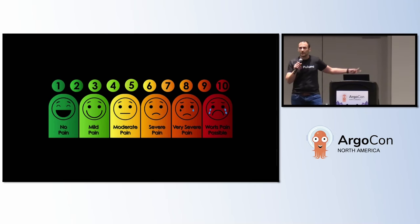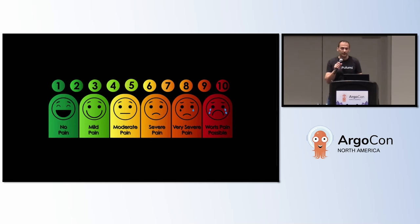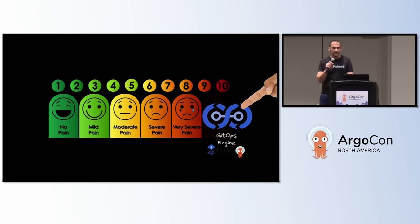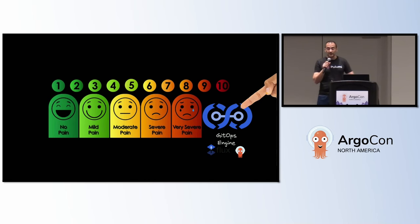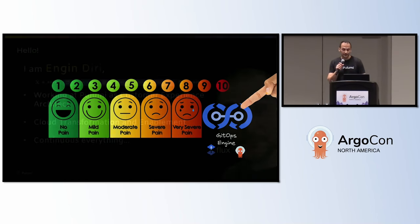Just as an introduction, this is a typical pain level. When you go to a doctor, or with my daughter for example — she cannot really express herself — and you say, 'on a scale, what is your pain currently?' That's what it's like when you're doing GitOps on a large scale in an enterprise environment, especially promoting artifacts between different environments. You can really see where the pain is coming from.